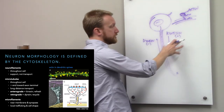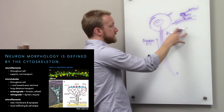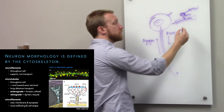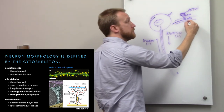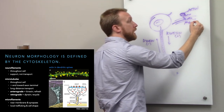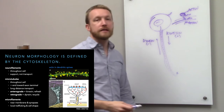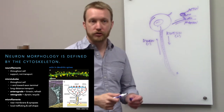For long-range transport, think kinesin and dynein. For short-range, that's going to be myosin, and there are different forms of myosin that run in different directions.